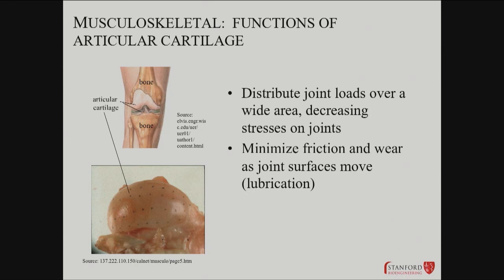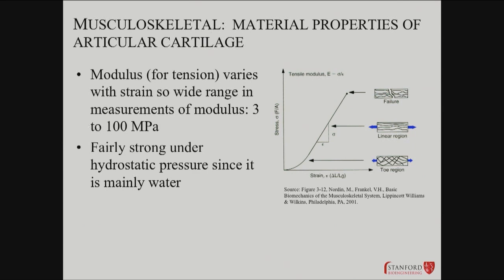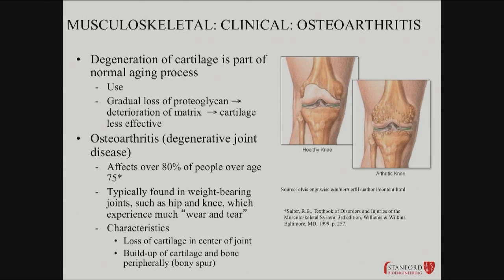Articular cartilage is designed to minimize friction and wear and distributes joint load over a wider area. It's really important, for example, in the knee — a very hard-working joint. It has very interesting material properties: very strong hydrostatic pressures, it's mostly water, and water is not very compressible. It operates over a very wide dynamic range with a wide Young's modulus depending on where you are in the stress-strain relationship. It degenerates over time — part of normal aging — with a gradual loss of proteoglycans even independent of use, and cartilage becomes less effective in its load-bearing role.